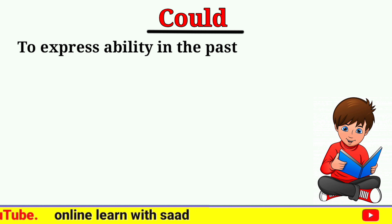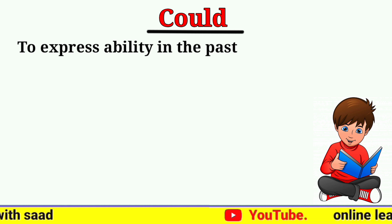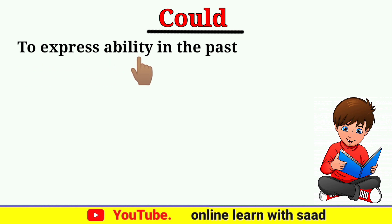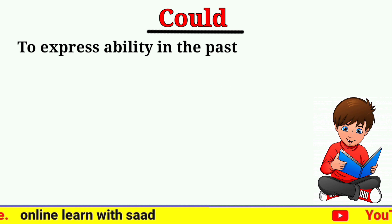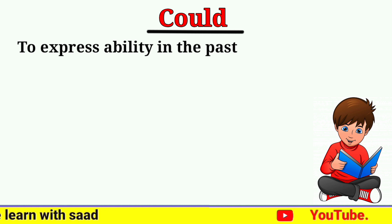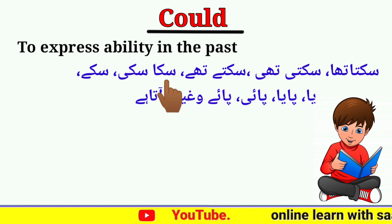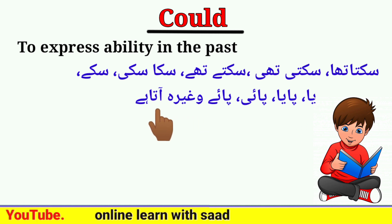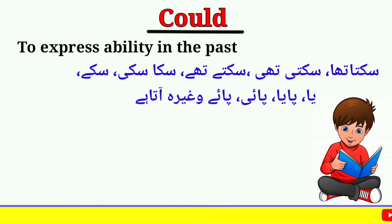آج کی کلاس میں ہم could modal work کو discuss کرنے جا رہے ہیں۔ Could، can کی second form ہے — to express ability in the past۔ یعنی کہ past کی ability کو show کرنے کے لیے could کا استعمال کیا جاتا ہے۔ Could modal کے جملوں کے آخر میں سکتا تھا، سکتی تھی، سکتے تھے، سکا، سکی، سکے، یا پایا، پائی، پائے وغیرہ آتا ہے۔